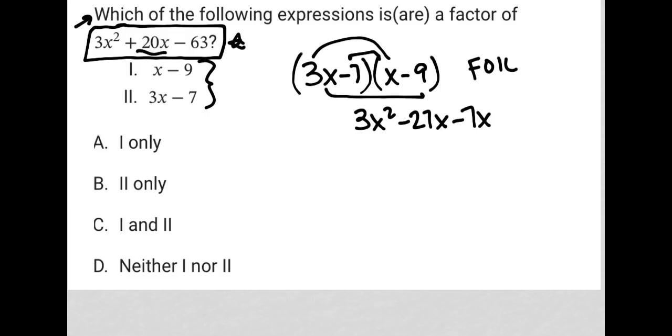So I can fix that by making this a positive 27x, which would mean I need to make this a plus 9. Let's see if that fixes everything else. So then for my last terms, I'd have negative 63.